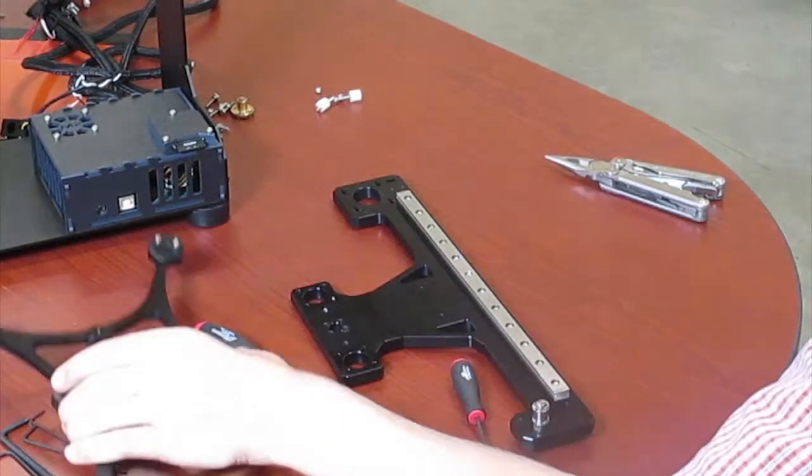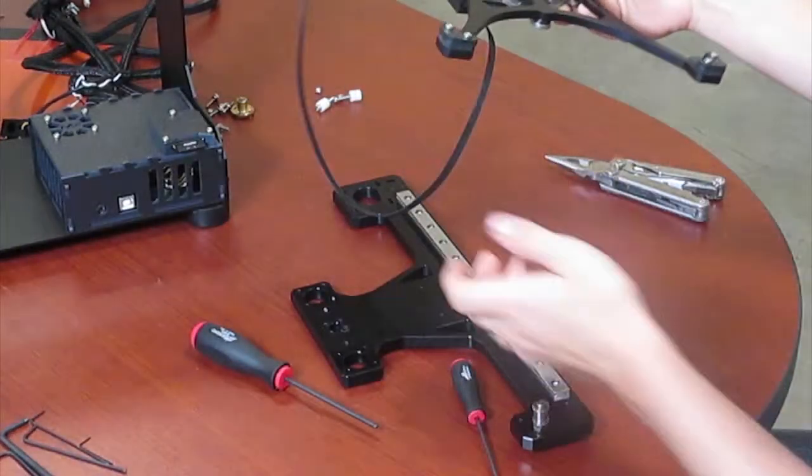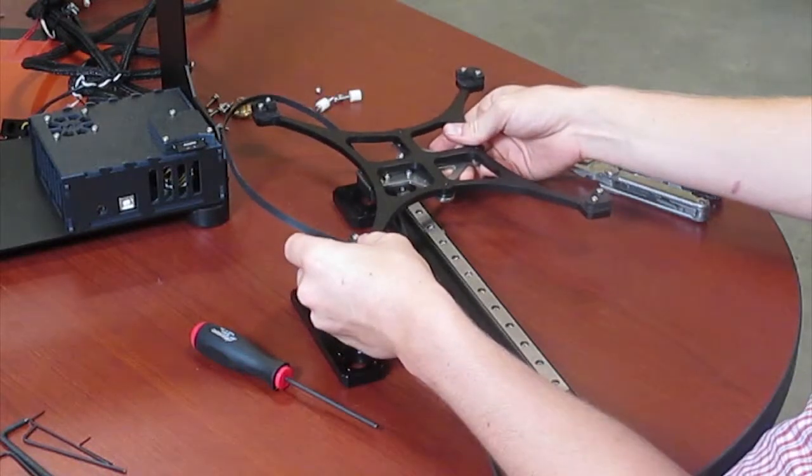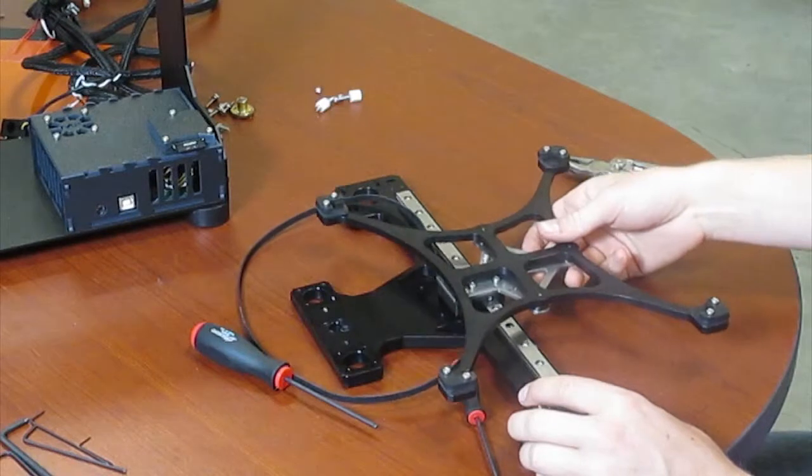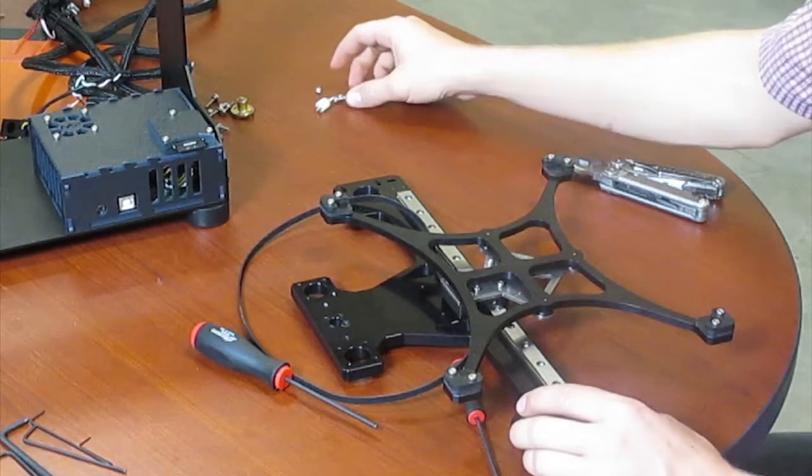After you've mounted the rail, it's time to slide the carriage onto the rail. Be careful when you're doing this as the balls can come out of the carriage. Once you have that mounted, it's time to put on the end stops.